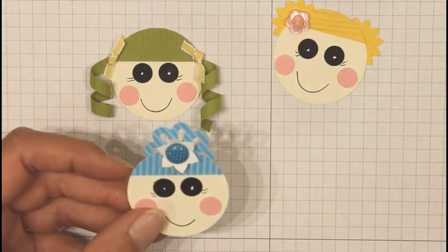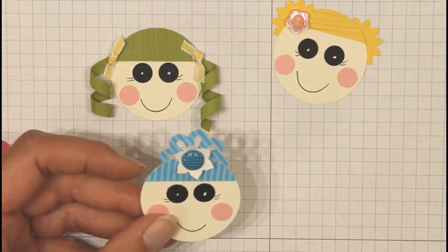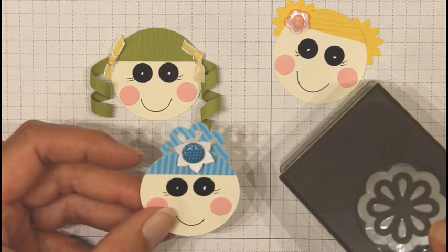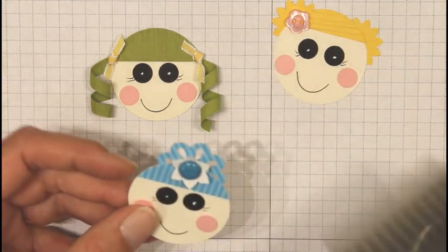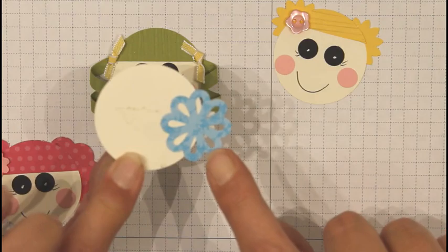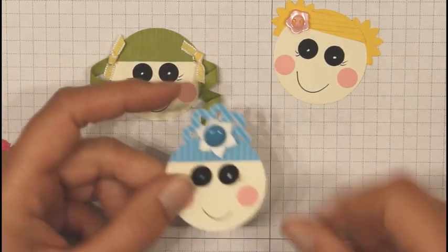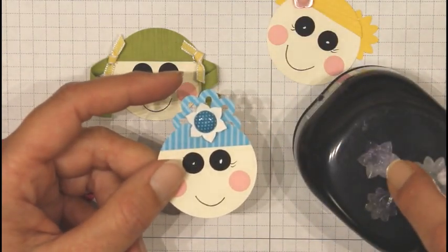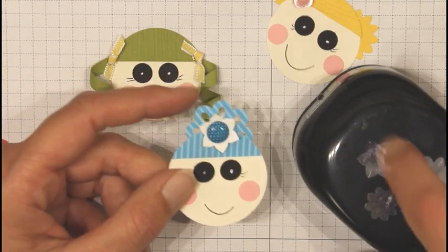And for this one, I used the retired punch again, the Blossom Bouquet Triple Layer Punch. And I punched out that flower and just attached it to the back and then made her a little flower for her hair using this flower right here.